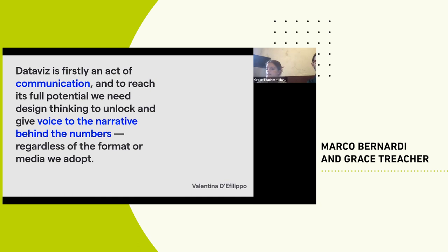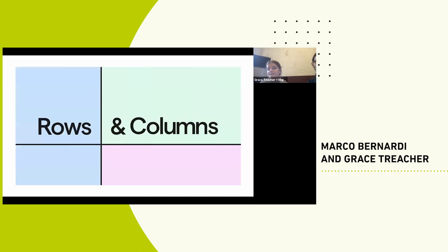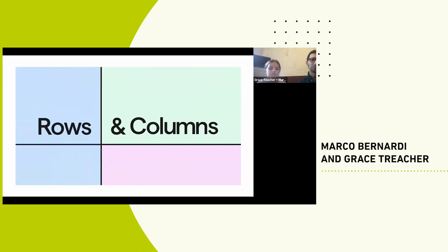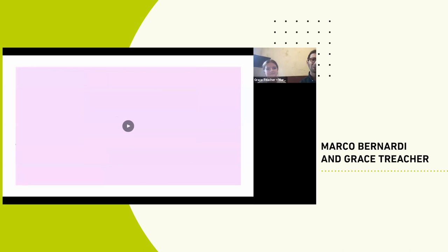I want to finish on this quote: 'Data viz is first an act of communication and to reach its full potential, we need design thinking to unlock and give voice to the narrative behind the numbers, regardless of the format or media we adopt.' Whilst following accessibility guidelines is a really great start and we should all be doing that, it's important to consider accessibility as a human experience and to think of more creative ways that we can overcome barriers in sharing information. We also run a newsletter where we share interesting projects by designers we're inspired by every month — please check us out. Thank you so much for listening.